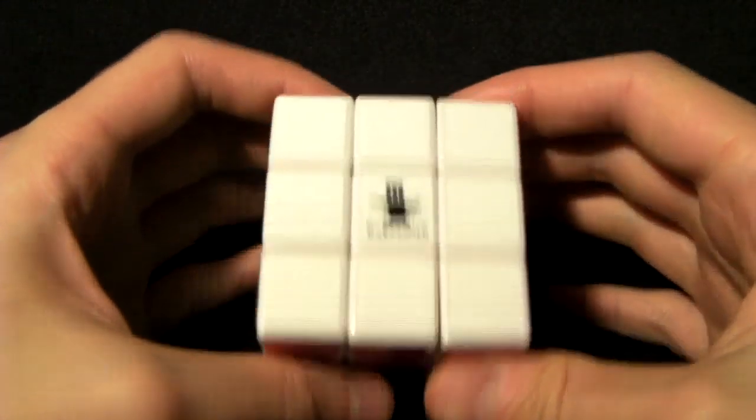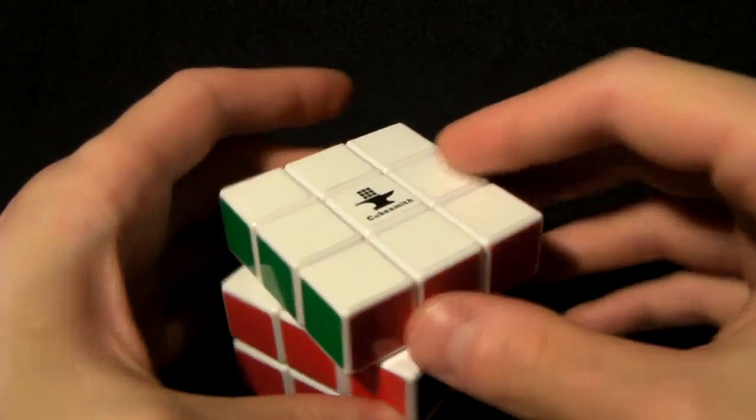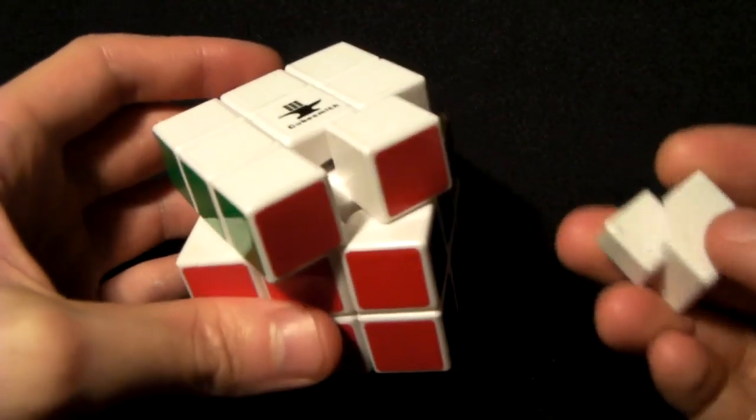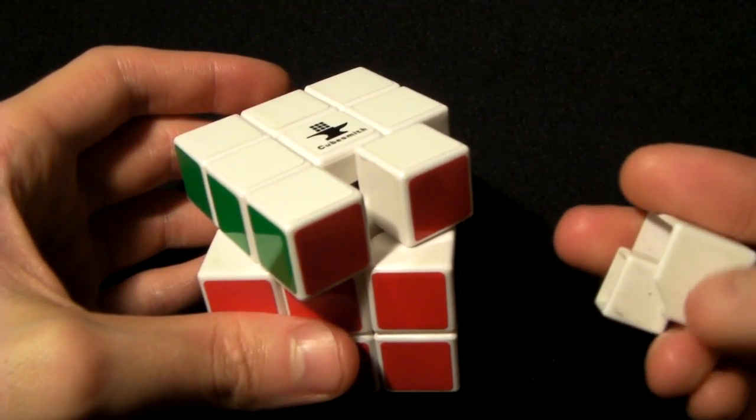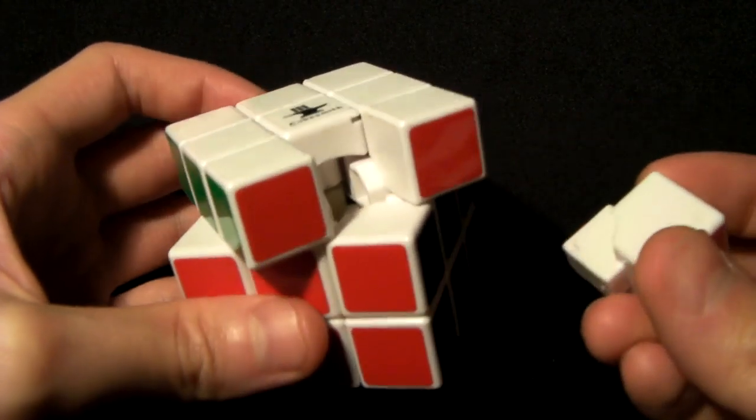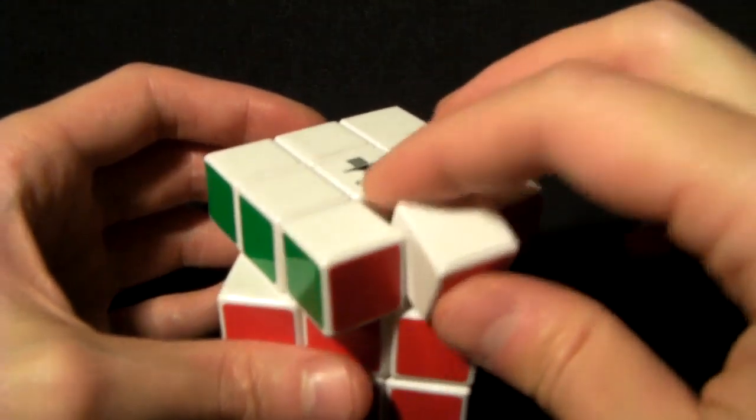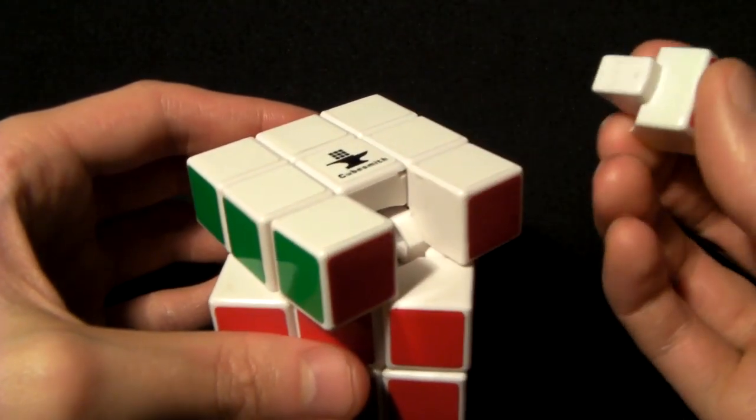So I'm going to start disassembling mine. I'm going to pull out an edge first. If you're using a regular store-bought Rubik's Cube, chances are it's going to be much tighter than these DIYs I have, so you might have to struggle a bit more pulling those pieces out or maybe get a screwdriver and pry them out.